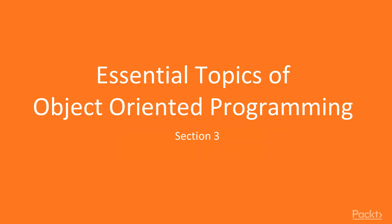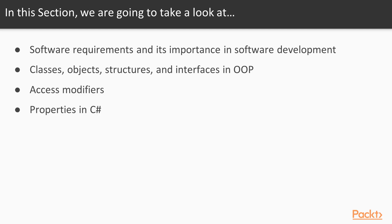Hello, welcome to section 3: Essential Topics of Object Oriented Programming. Let's see what we are going to cover in this section. We will talk about software requirements and its importance in software development. We will learn about classes, objects, structures and interfaces in object oriented programming. We will also learn about access modifiers and properties in C Sharp.